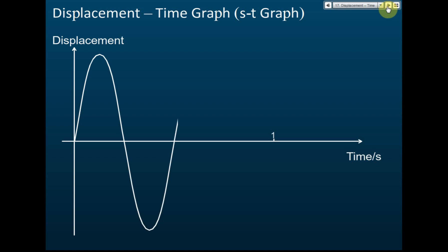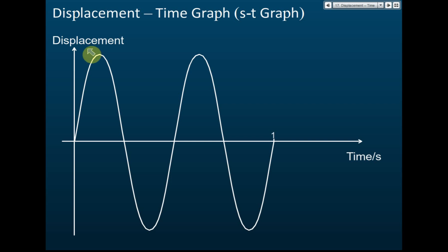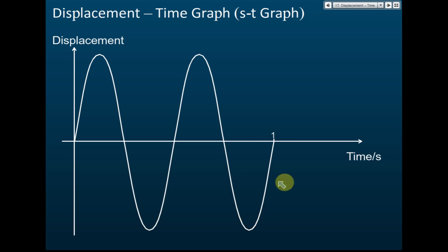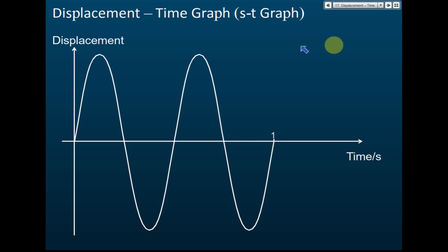For example, let's say we have an oscillating object. The object oscillates up, down, up, down. If we plot the displacement of the object against time, the graph looks something like this. We call this shape sinusoidal — a sinusoidal graph. This is usually how the displacement-time graph looks like.